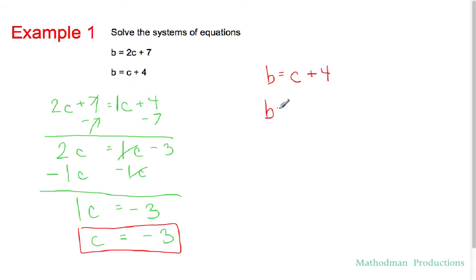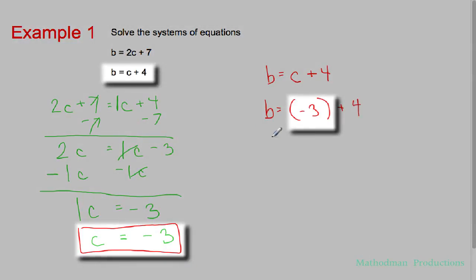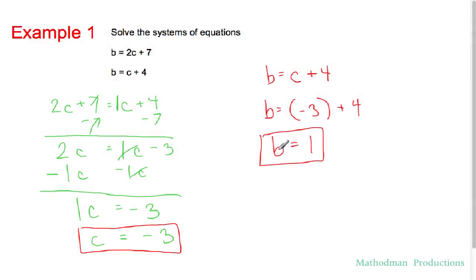b equals, instead of c, we already know it's negative 3 plus 4. And now you have b solved for, b equals 1. And now you have them solved. b equals 1, c is negative 3. Teacher might make you write it as a coordinate like this.